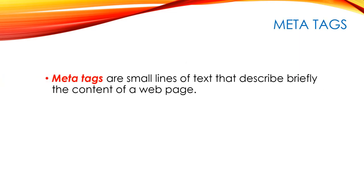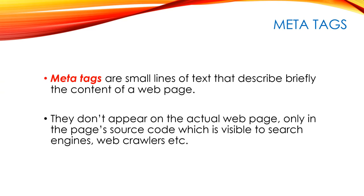Another important feature of websites, basically hidden, is something called meta tags. These are small lines of text that briefly describe the content of a web page. They don't appear on the page, although there are ways to find them. The web crawlers or bots do see them and gather that information, making meta tags one of the main sources of search information.